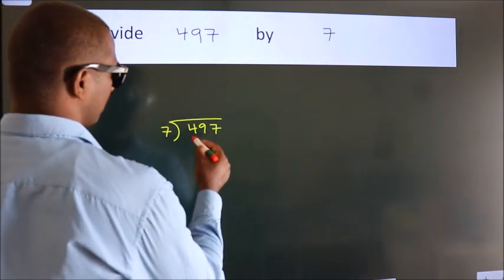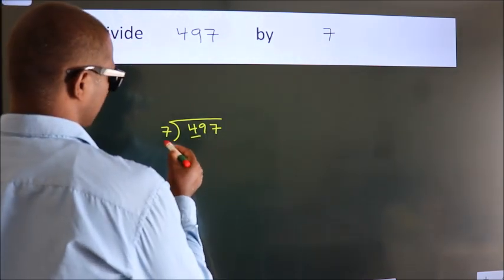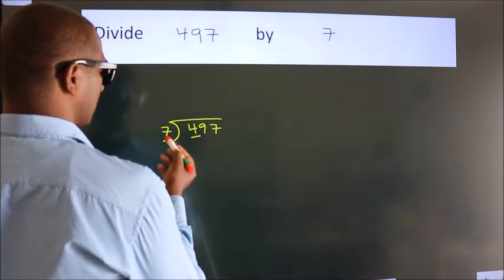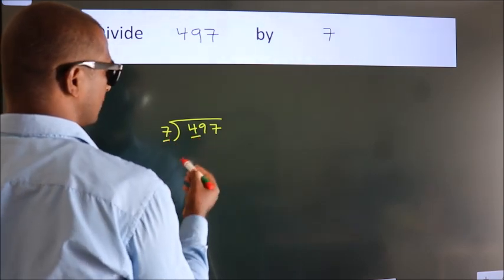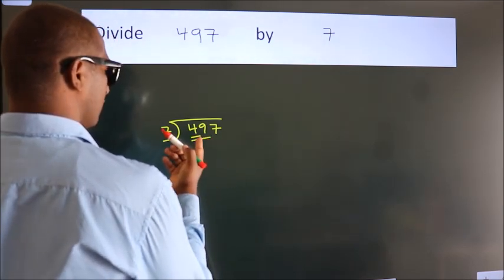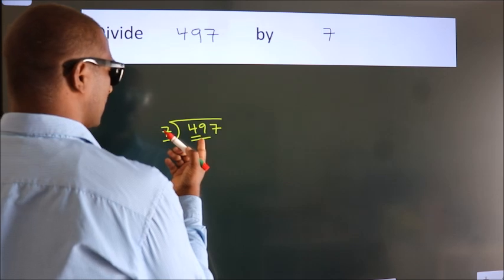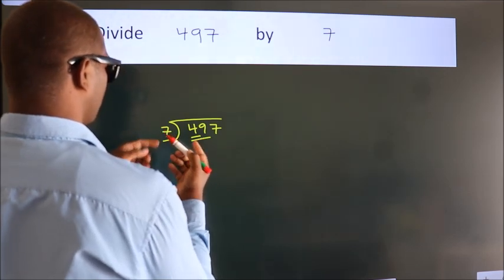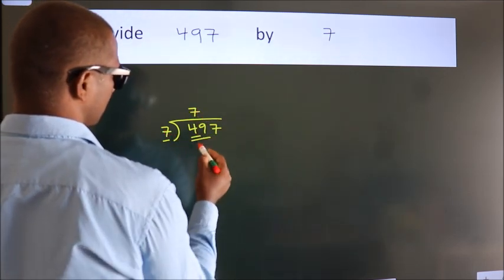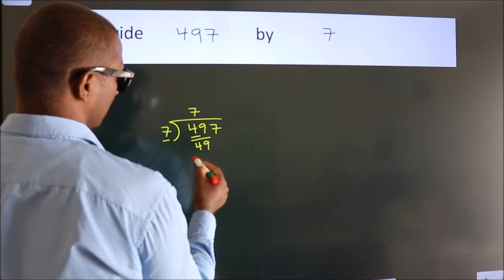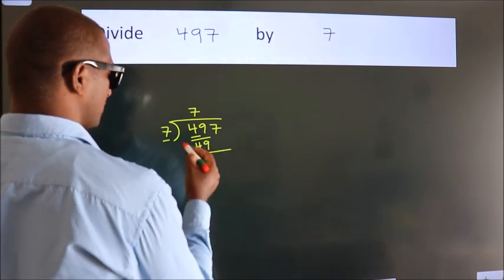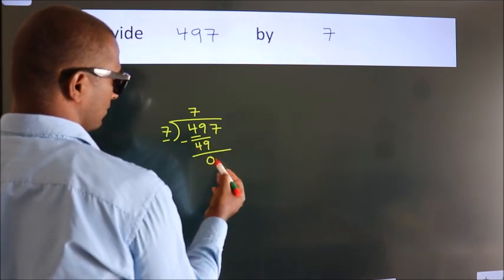Here we have 4, and here 7. 4 is smaller than 7, so we should take 2 numbers: 49. When do we get 49 in the 7 table? 7 sevens are 49. Now we should subtract — we get 0.